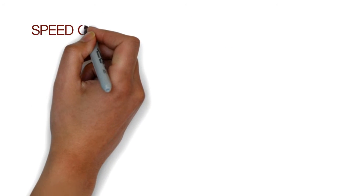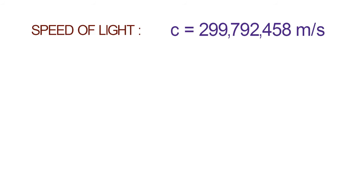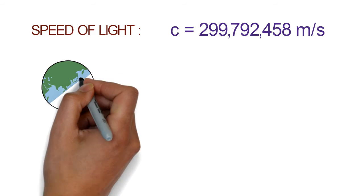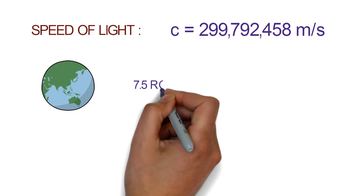Now, coming to the speed of light. Light travels at a speed of 299,792,458 meters per second. Let us visualize this. Suppose if light is allowed to travel in a circular path around the Earth, then in one second it will make 7.5 rounds of Earth.